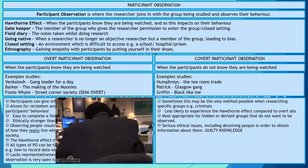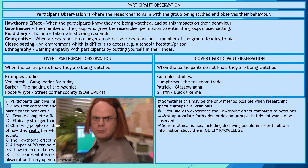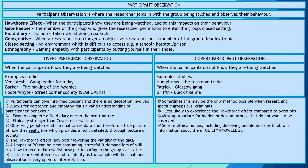The key strengths of covert participant observation are that it's possible to research criminal groups, it's less likely to experience the Hawthorne effect, and it's most appropriate for hidden groups who don't want to advertise their activities or be observed.